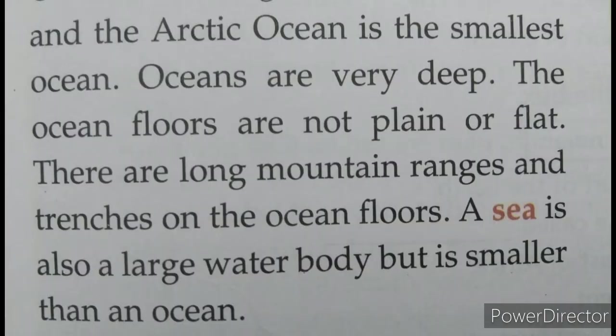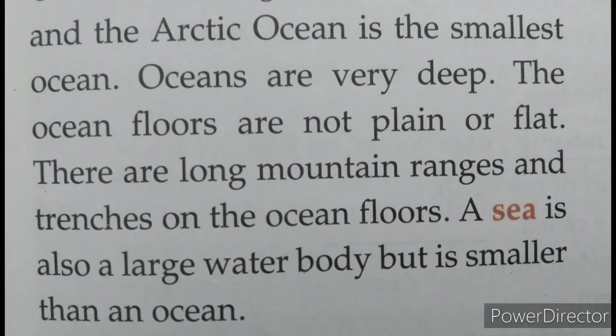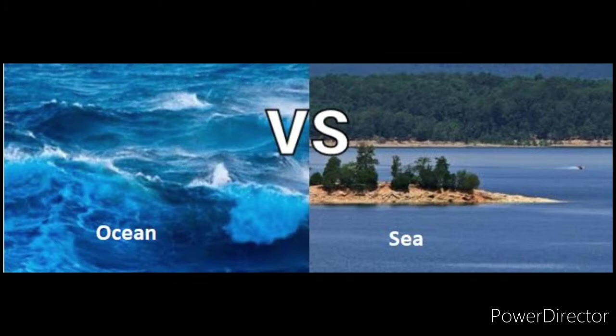Oceans are very deep. The ocean floors are not plain or flat — there are long mountain ranges and trenches on the ocean floors. Trenches are deep, narrow ditches inside the sea. A sea is also a large water body but is smaller than the ocean. So ocean and sea are both water bodies, but the smaller portion is called the sea and the larger part is the ocean.